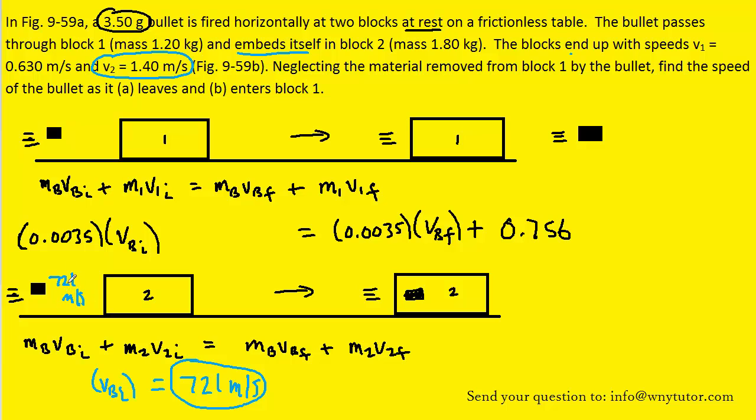But now keep this in mind. If that's the speed of the bullet right before it hits block 2, that has to be the speed of the bullet after it immediately left block 1. That's a very important statement, so I want to say that one more time. So the 721 meters per second is the initial velocity of the bullet as it's approaching block 2,